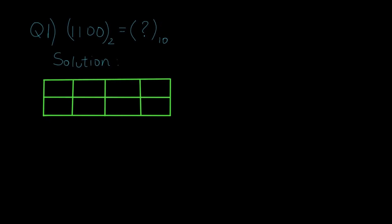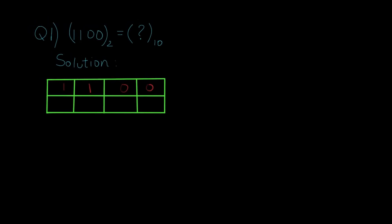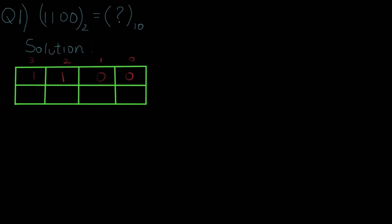The first question is 1100 binary, which needs to be converted to a decimal value. You can draw a table as I have drawn, and first write down the binary number in each block: 1 1 0 0. The next step is to assign positional values. We start from right to left — this is at the 0th position, this is at the first position, this is at the second, and this is at the third.